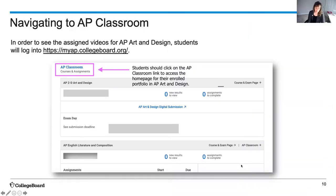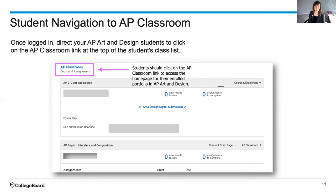Now that we know how to navigate AP Classroom from the teacher view, let's look at the student view. Students will also log into myap.collegeboard.org to view the AP Art and Design course for which they're registered, and where they'll see their assigned videos. Students should click on the AP Classroom link, and from there, choose the AP art course where they will access assigned videos and AP Classroom content.